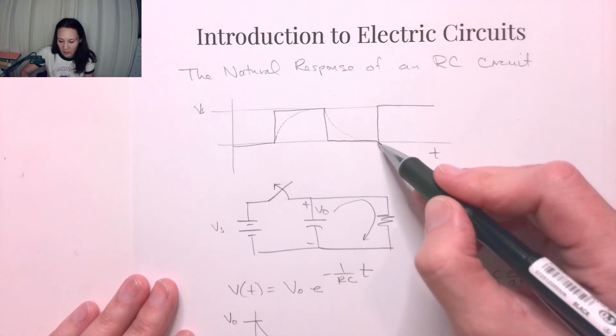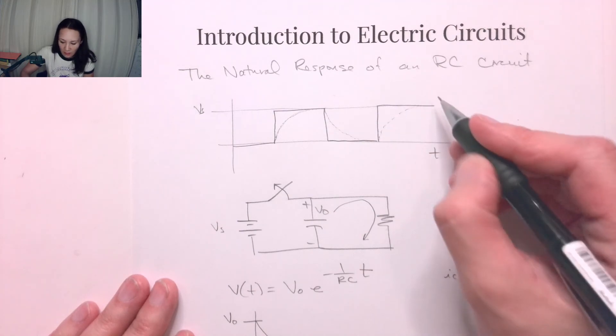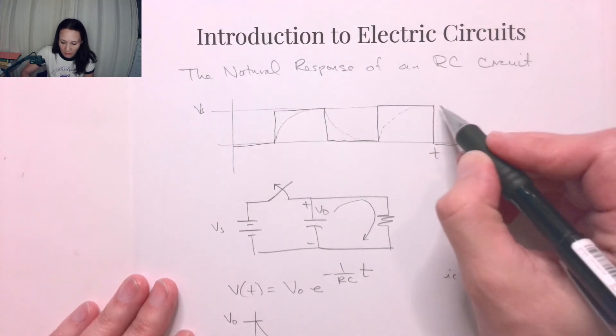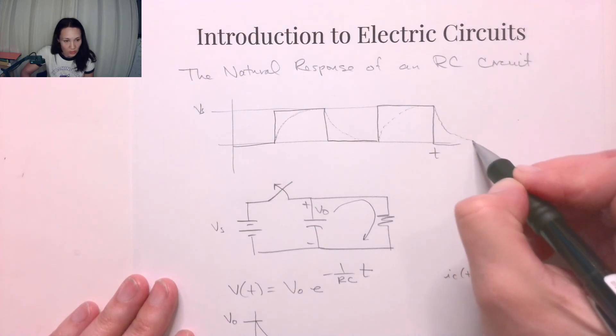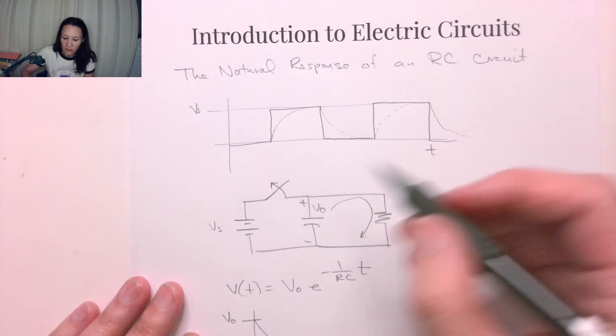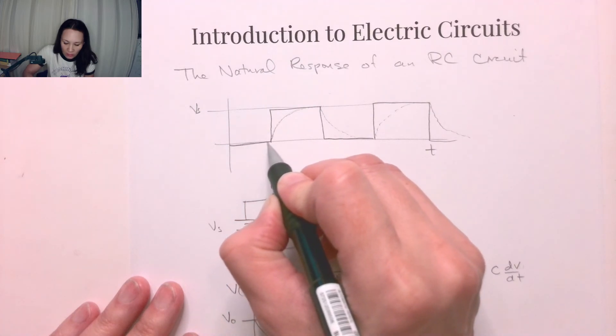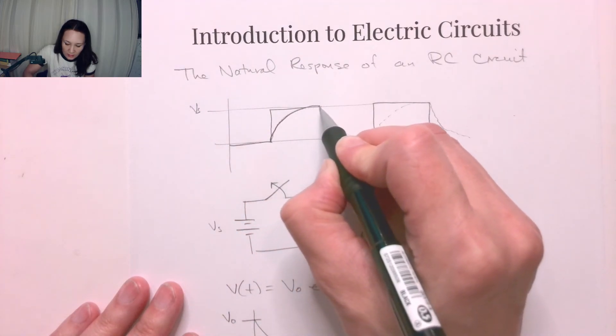When we turn it back on, the capacitor charges back up. When we turn it back off, the capacitor discharges through the resistor. If you look at the voltage in your RC circuit through an oscilloscope, this is what you would see.